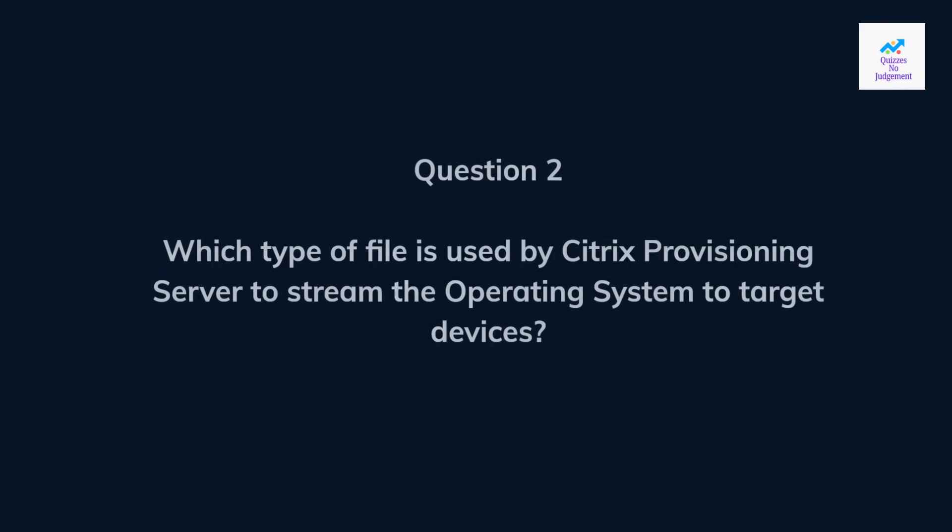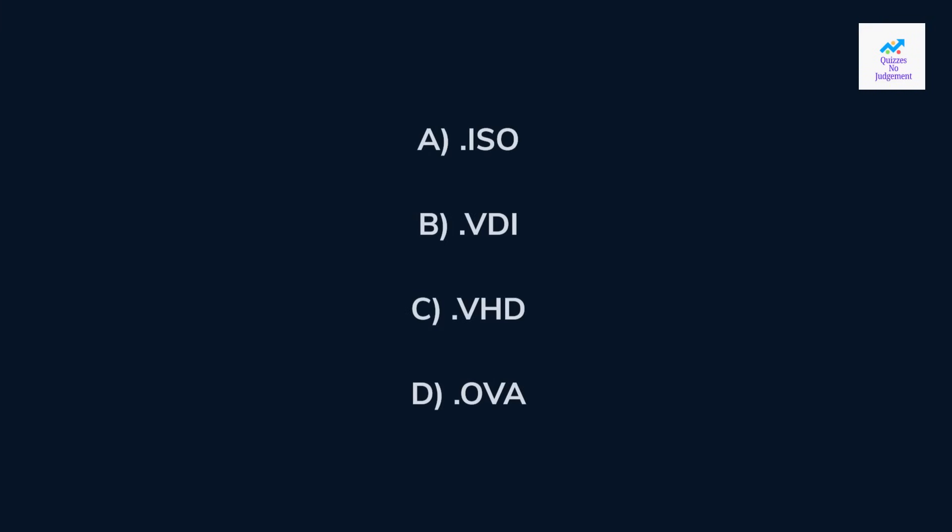Question 2. Which type of file is used by Citrix Provisioning Server to stream the operating system to target devices? A. ISO. B. VDI. C. VHD. Or D. OVA.